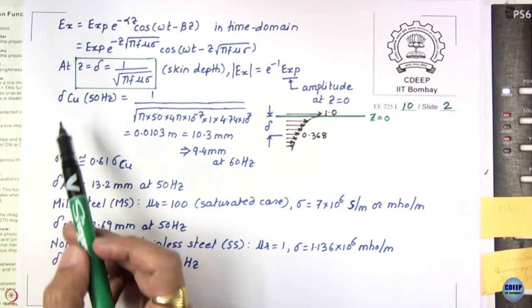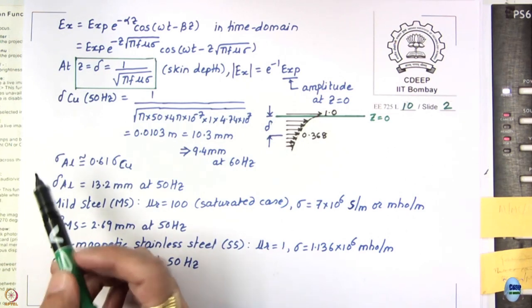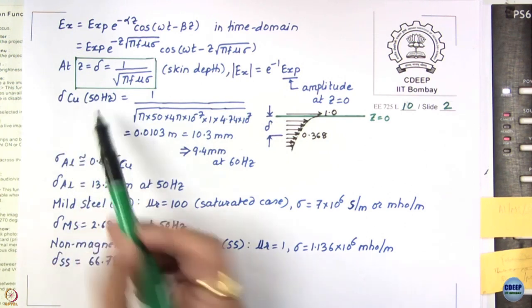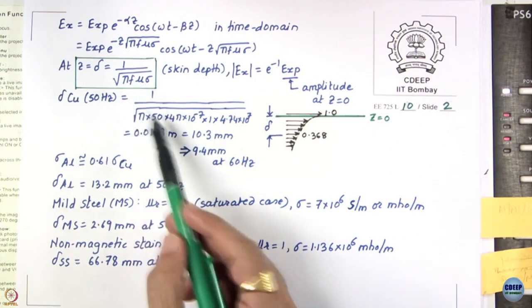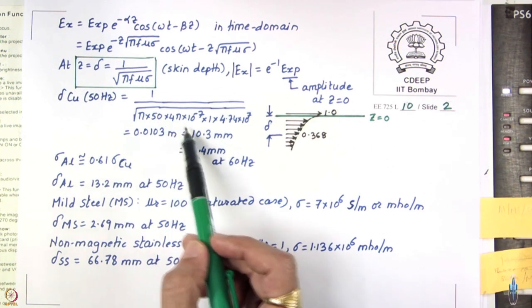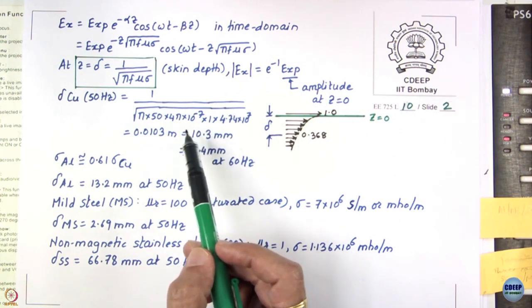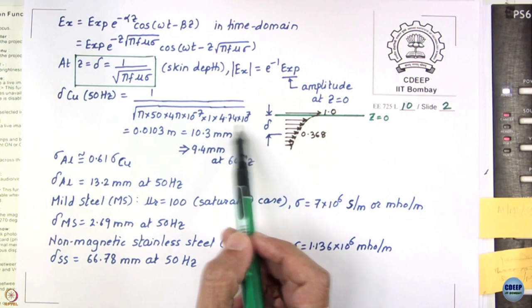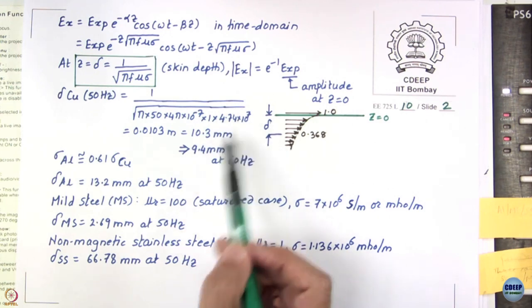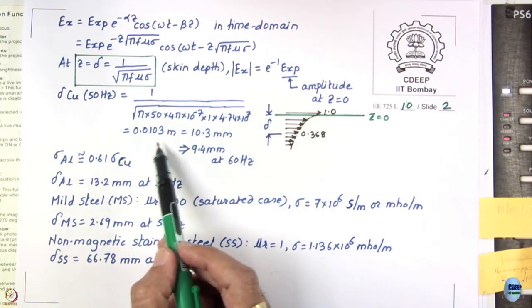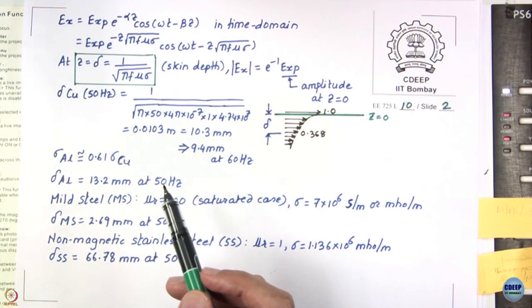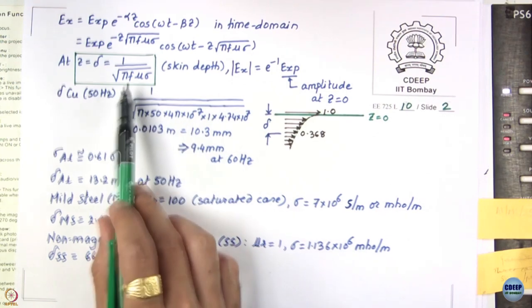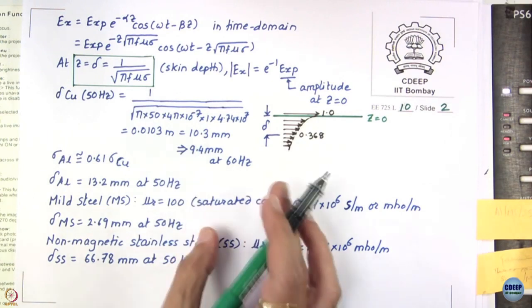Calculating skin depth for materials commonly used in electrical machines: for copper at 50 Hz, mu_r is approximately 1 (diamagnetic) and conductivity is 4.7×10⁷ S/m, giving a skin depth of 10.3 mm. At 60 Hz it is 9.4 mm, since skin depth is inversely proportional to the square root of frequency — as frequency goes up, skin depth drops. For aluminum, conductivity is 61% of copper's, giving a skin depth of 13.2 mm at 50 Hz.